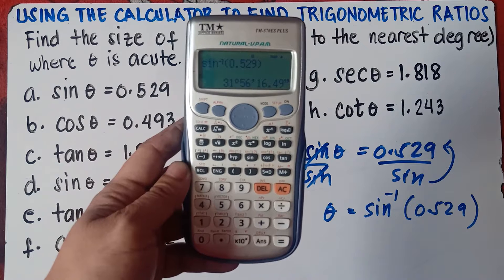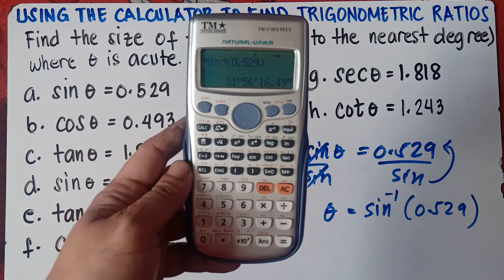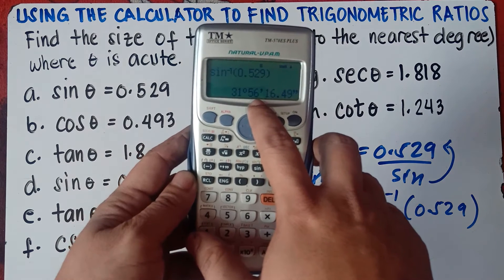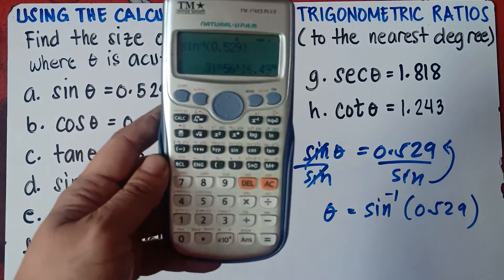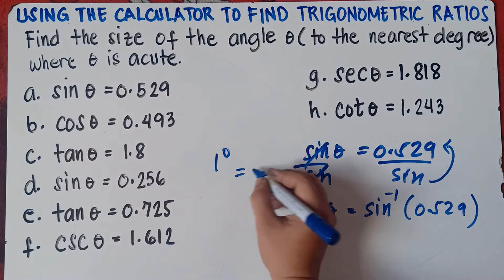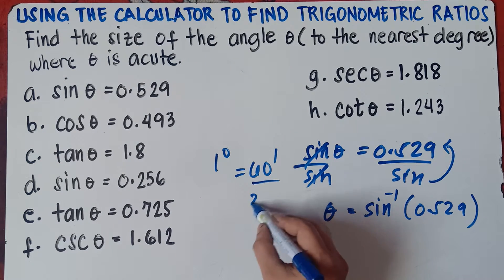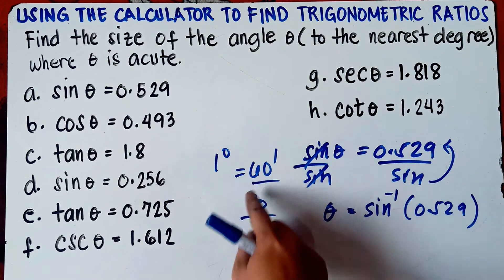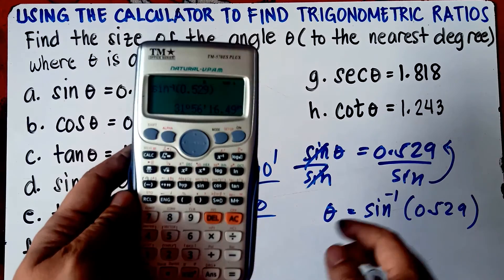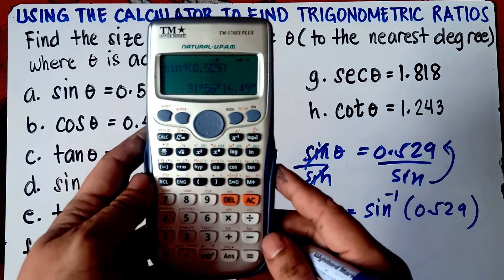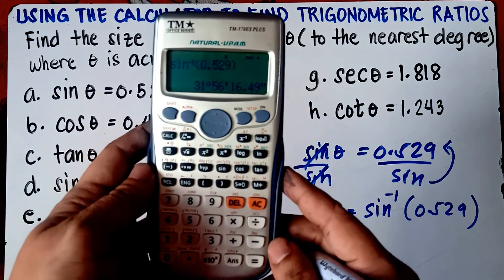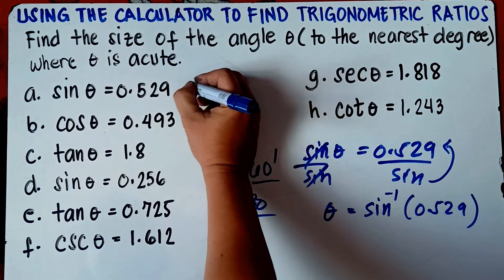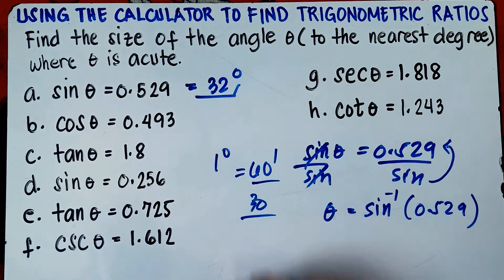Press 0.529, then close parenthesis, equal sign. Press the degree-minute-second symbol, and you will have 31 degrees, 56 minutes, 16.49 seconds. Now if the minutes is 30 or greater than 30, you can round up the degree, because 1 degree is equivalent to 60 minutes, and half of 60 is 30. So 56 minutes is greater than 30, therefore we round up — our answer is 32 degrees. Theta equals 32 degrees.